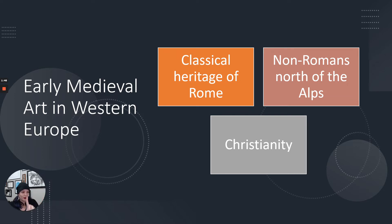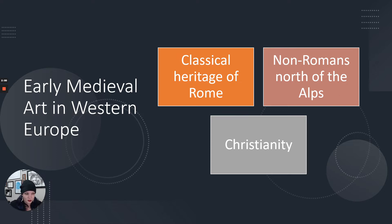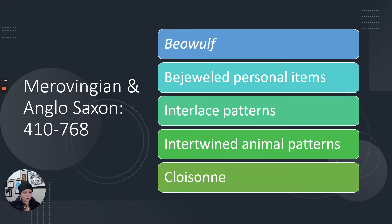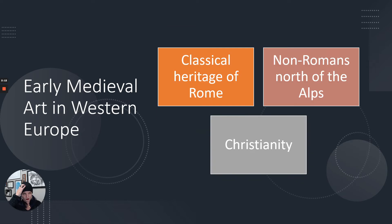The first is the classical heritage of Rome — Rome ruled all of Europe for a while, so that's very influential even after the fall of Rome. Second, non-Romans that lived north of the Alps are very influential. And third, this new religion called Christianity is super influential. Romans thought of everyone outside the borders of their empire as barbarians, so that's why we have a separation between the Romans and the non-Romans.